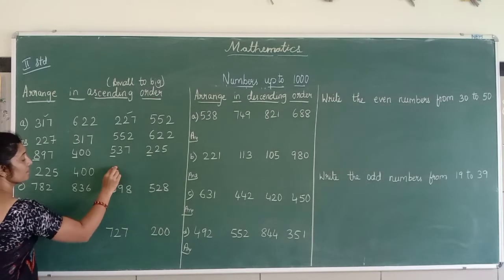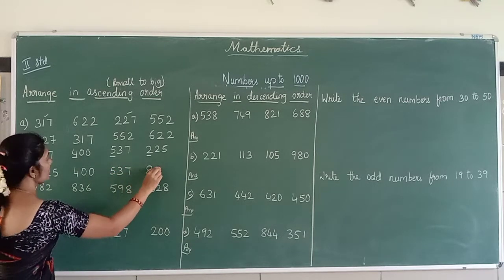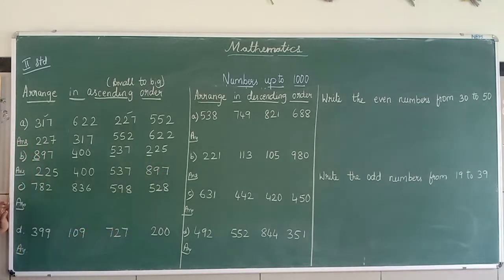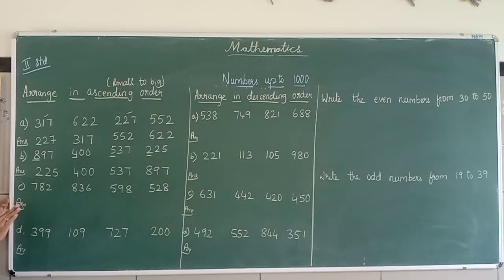After sum comes 5, 537. And after 5, it is 897. So you got small, big, big, bigger. So like this, you are going to arrange the ascending order.